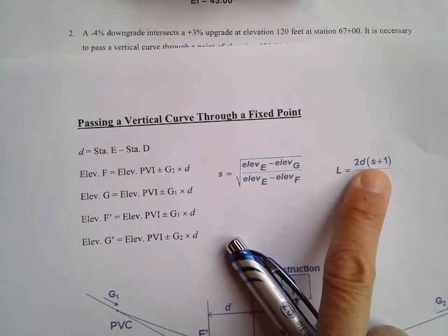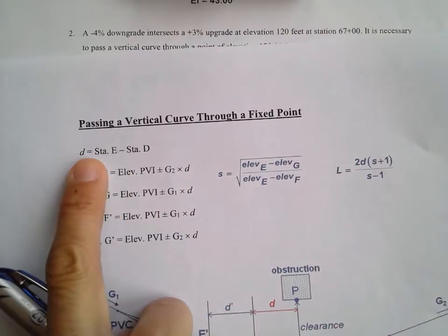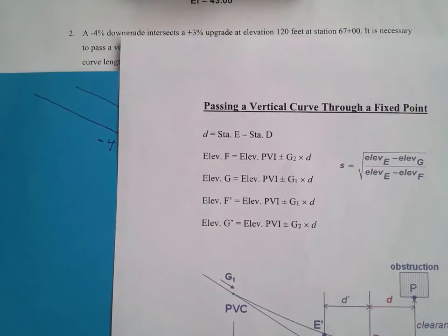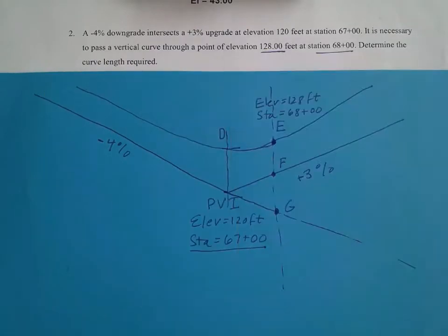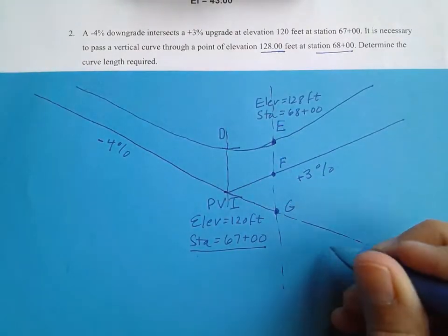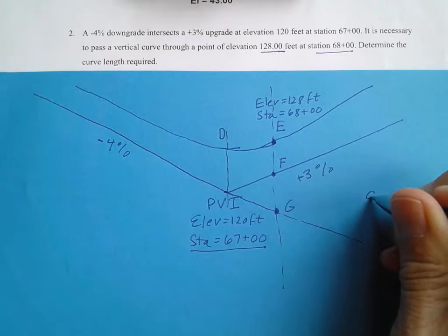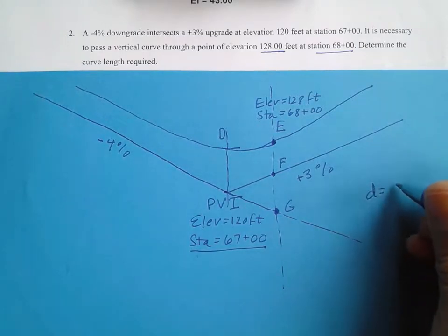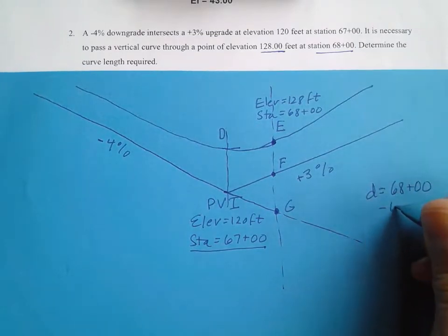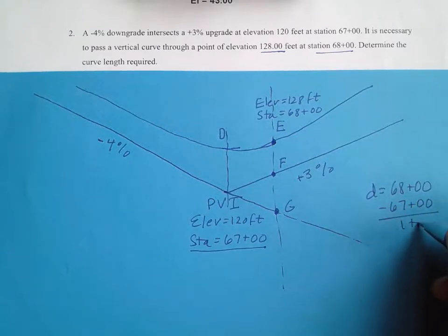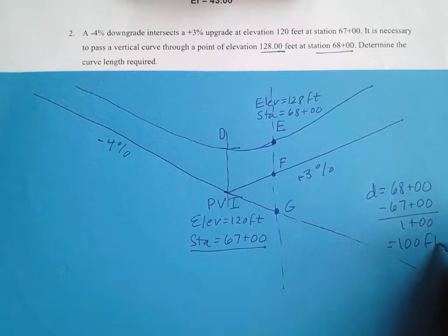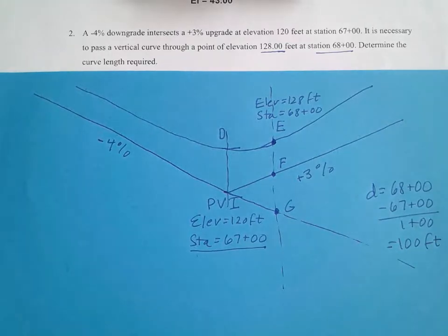Let's start by finding d — the difference between the stations at point E and point D. So d equals 68+00 minus 67+00, which is 1+00, or 100 feet. That's my d value.